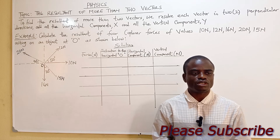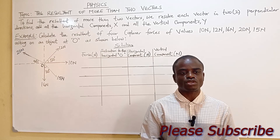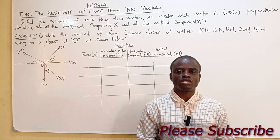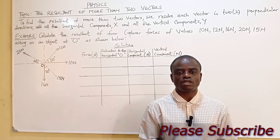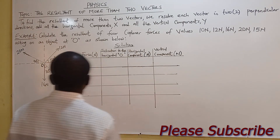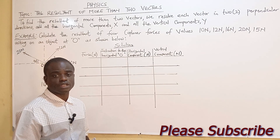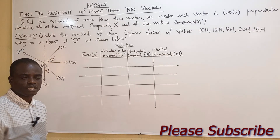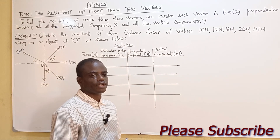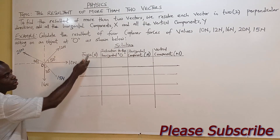When resolving vectors, you resolve into either horizontal or vertical direction. Resolving to horizontal means it carries cos θ, and resolving into the vertical direction uses sin θ. When finding the resultant of more than two vectors, you resolve each vector into perpendicular directions, then add the horizontal components together and add the vertical components together.